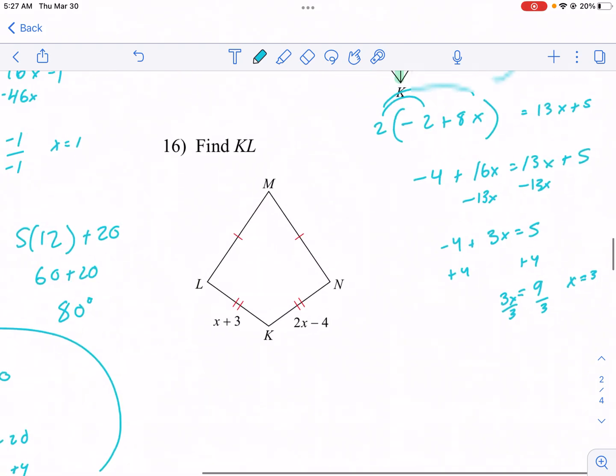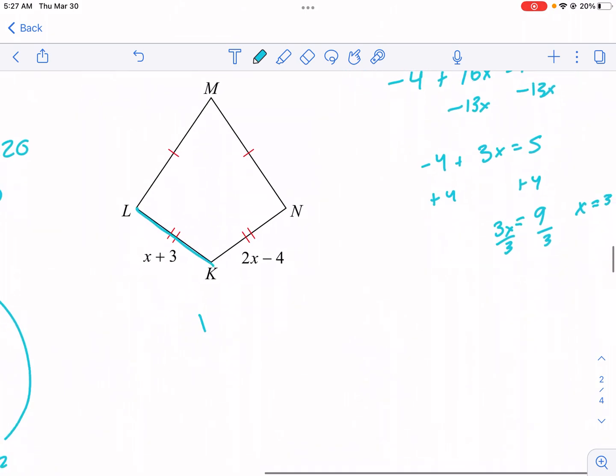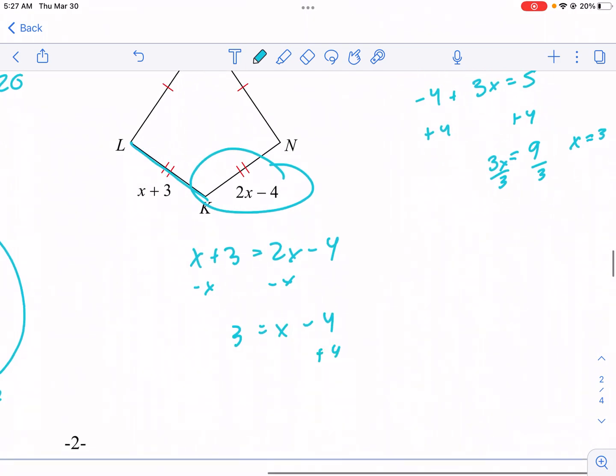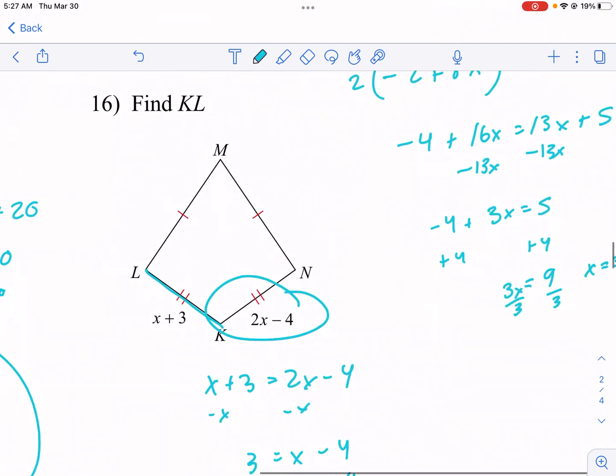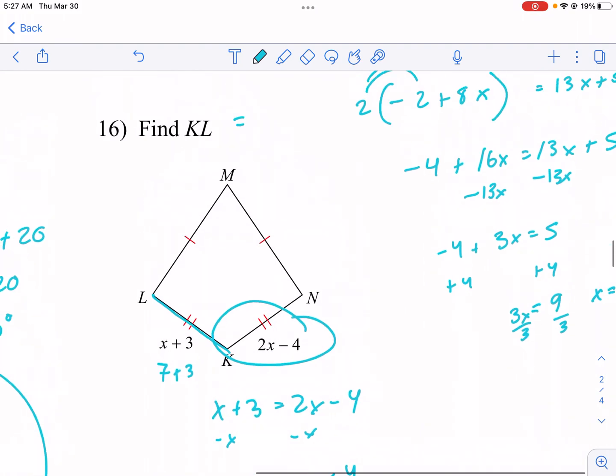And last one. Find KL. KL is this segment right here. This one's actually easier because we can just set them equal to each other because they're congruent. 2x minus 4. I subtract x. I get 3 equals x minus 4. And then I just add 4. I get x equals 7. Not done. I need to plug it back in. We're trying to find KL. It doesn't honestly matter because they're congruent. But we just do 7 plus 3. And we get KL equals 10 units. I should write units.